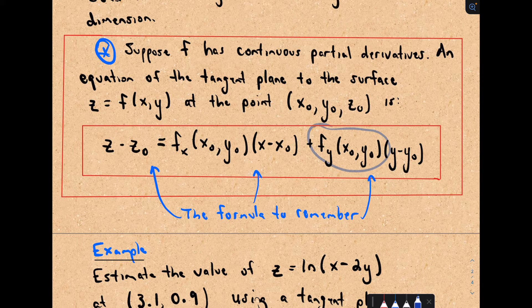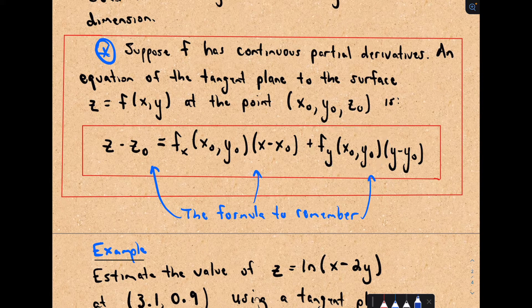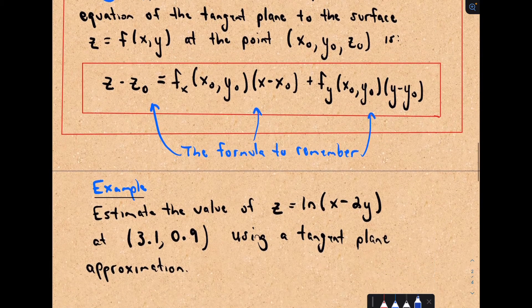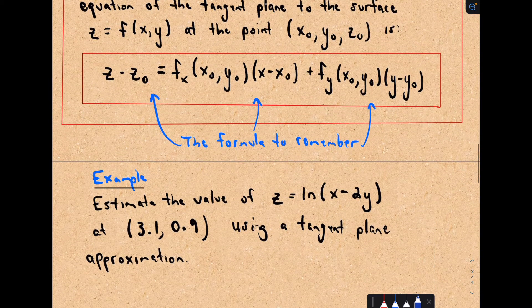And I take the partial with respect to y, plug in the x and y coordinate that we're using, and multiply it by y minus the y coordinate. That's the formula to remember for this tangent plane.